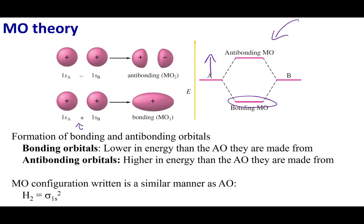We also have to consider the symmetry of these orbitals — specifically, whether it is symmetric with the bonding axis, i.e., is it a sigma orbital or a pi-type orbital? If I rotate the bonding orbital around the bonding axis, it is symmetrical, so it has sigma symmetry. The same is true for the anti-bonding orbital — rotating it around the bonding axis shows it is also sigma in symmetry.